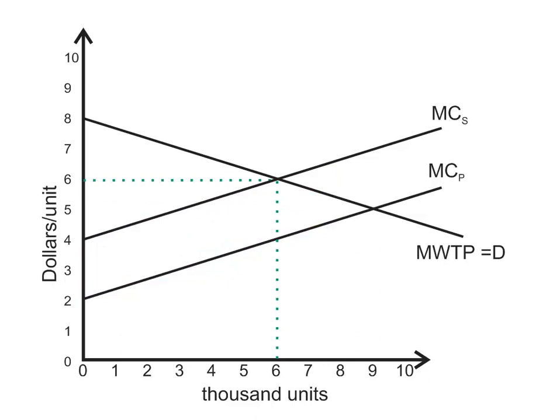Now the question is, would it keep going? Could they keep going further and pushing the firm back even further? Well, again, the sufferers of the externality are still suffering damages equal to this now smaller red area. And they'd be willing to pay, again, another $2,000 to get the firm to reduce its supply by another 1,000 units. Would the producer accept this deal?